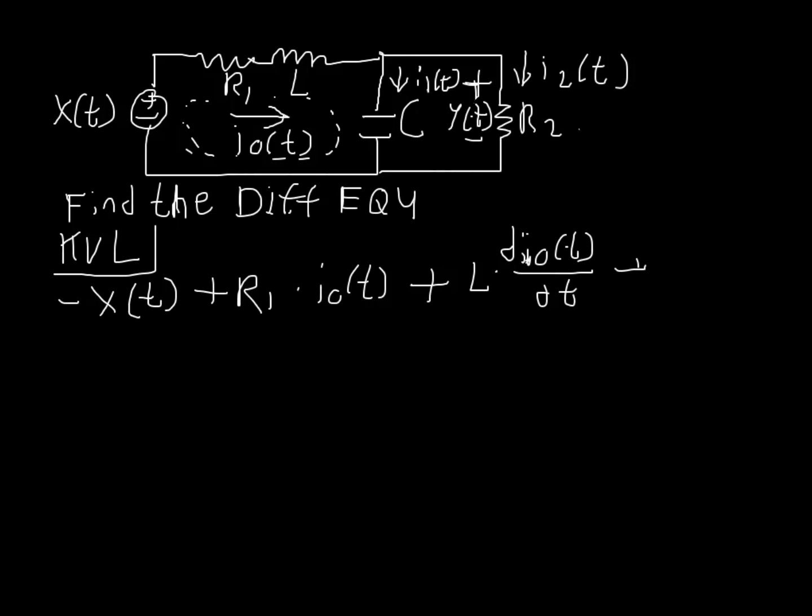And now the remaining term going through either the capacitor or r2 is the same because they're in parallel, is just y sub t. And this gives us our first equation. We're going to need this guy later.